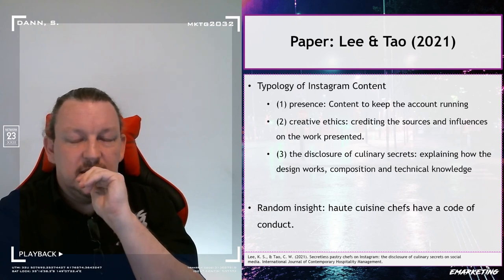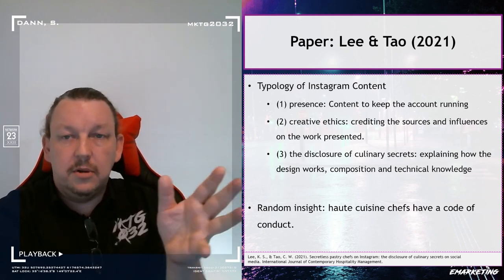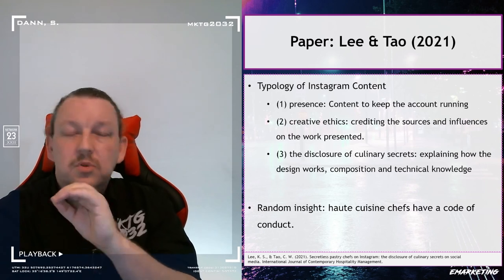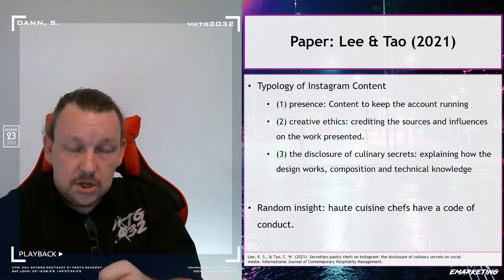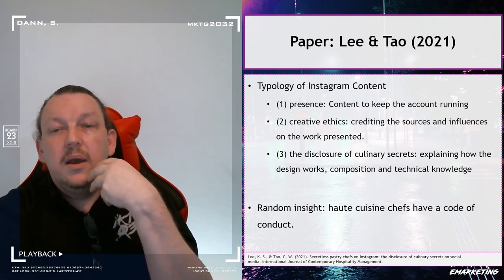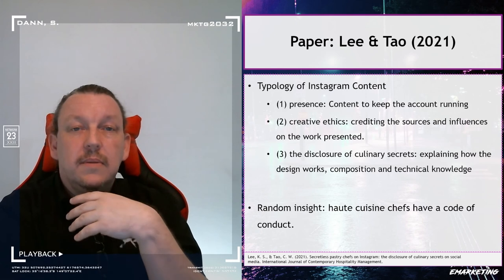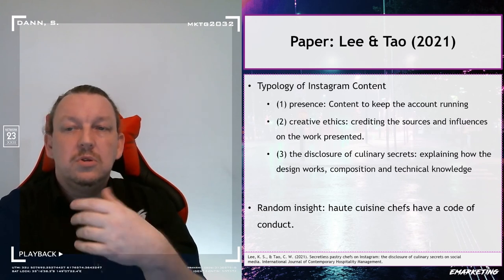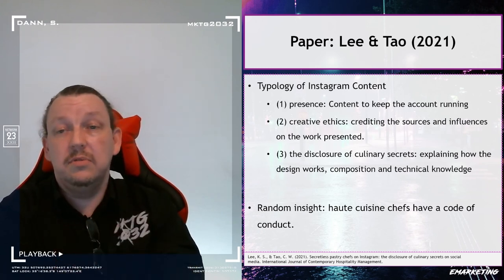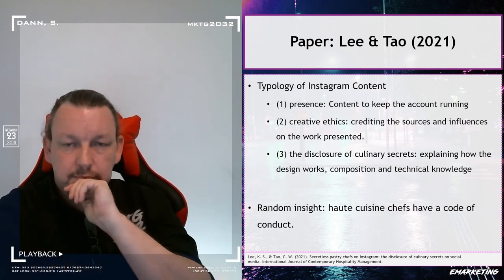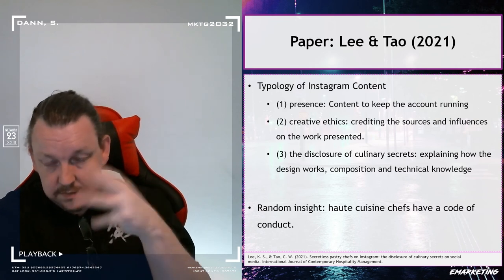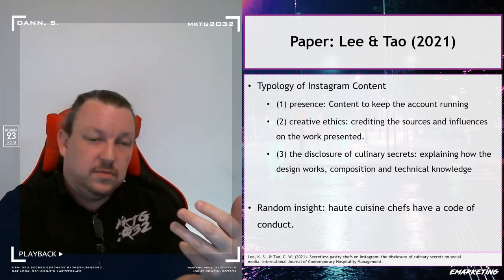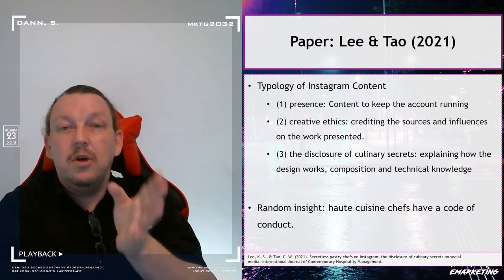The paper presents a typology of Instagram content. There are three types of content the pastry chefs were making. Content type one is presence — phatic social communication tools. You post to keep the account going and let people know you're still there; it's the social media equivalent of proof of life. In this class, this would be the weekly updates, the live thing of me going 'hey, welcome to week three, welcome to week four' — those are done live each week.